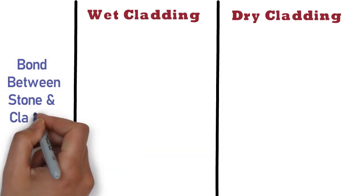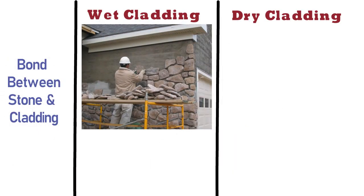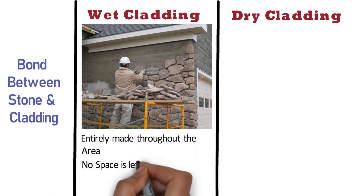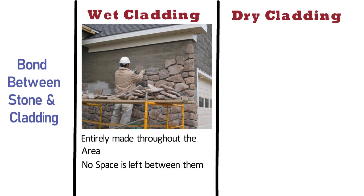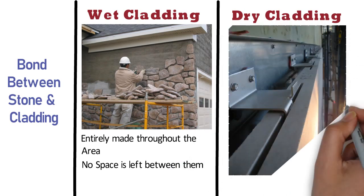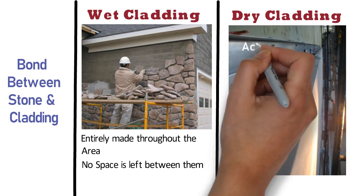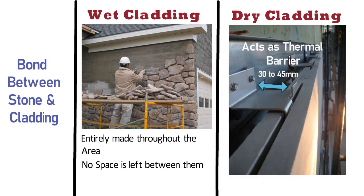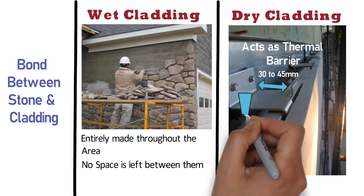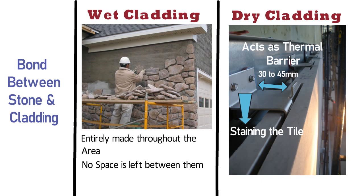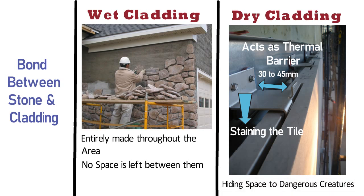Bond between stone and cladding: In case of wet cladding, the bond between the stone and cladding is entirely made throughout the area, and no space is left between them. Whereas in case of dry cladding, there is a gap of around 30–45 mm minimum between the wall and tile, providing a layer of air cushion that acts as a thermal barrier. However, water or moisture can also enter from here and may cause staining to the tile or stone. Additionally, this gap also leads to hiding space for dangerous creatures like snakes.